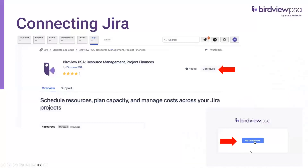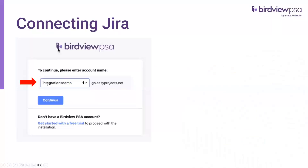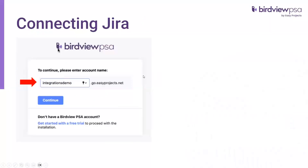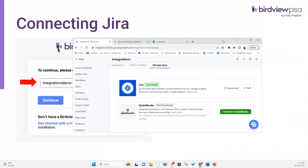Clicking Configure gives you a dialog box that says Go to Birdview — click on that. You can then enter your organization's Birdview URL. The only portion you need to enter is the first part; in this demo we have an integrations demo URL. The dot-go-dot-easyprojects-dot-net portion is always the same. Enter your company's instance and click Continue — your Birdview is now connected with Jira.